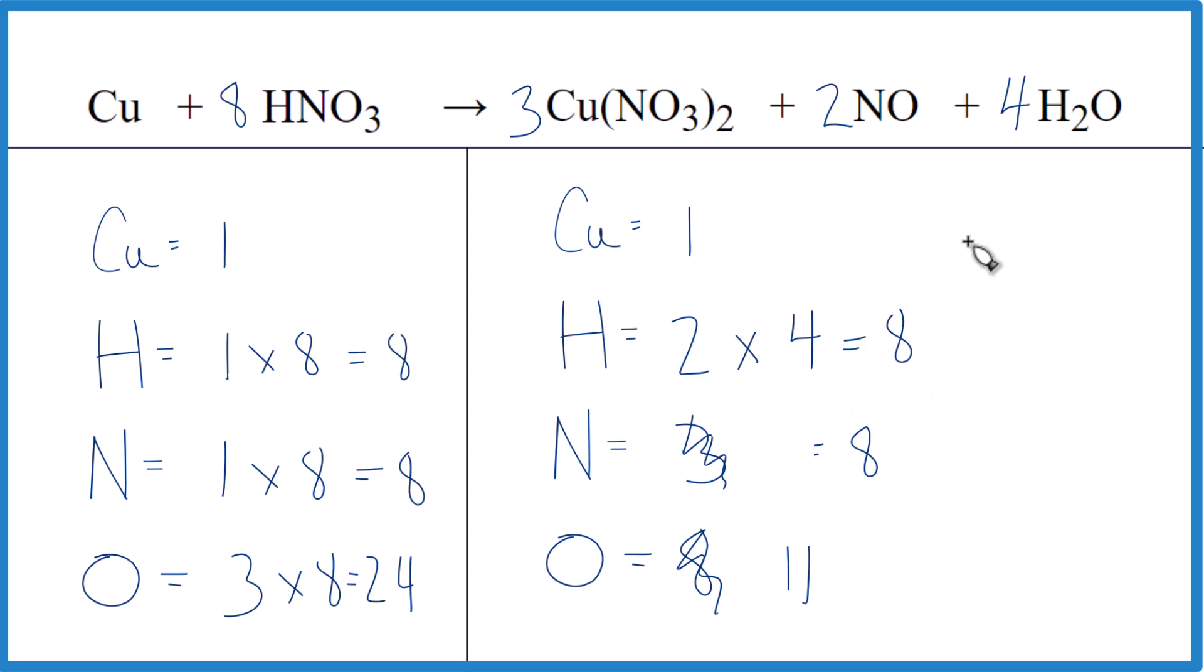So those are balanced, and let's add the oxygens up. So two times three is six, six times three is 18, plus two times one, two, plus four times one, four. That's 20, 24, and this is balanced.